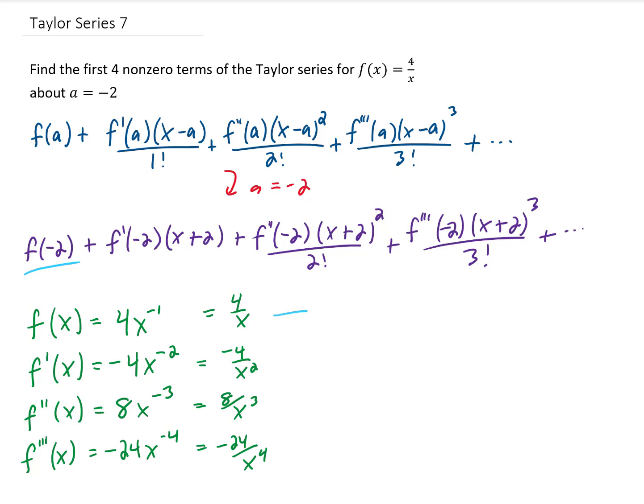We need f of negative 2 first. That's going to give us 4 over negative 2, which is negative 2. Next, we need f prime of negative 2, which is going to be negative 4 over negative 2 squared, which is going to give us negative 1.